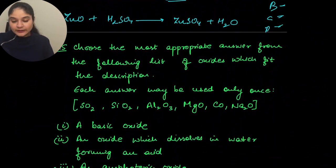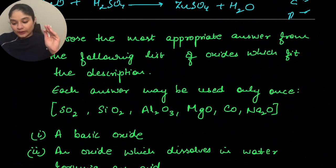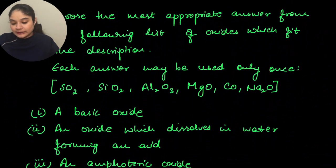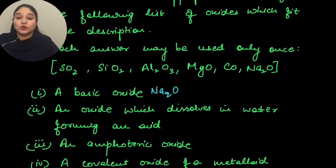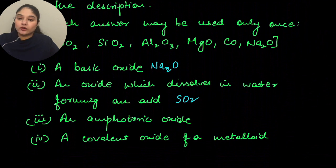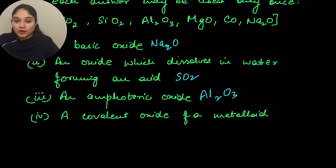Question 15: from the list of oxides, identify which fits each description. A basic oxide: Na₂O. An oxide which dissolves in water forming an acid: SO₂, because it gives sulfuric acid. An amphoteric oxide: Al₂O₃ — aluminum oxide. A covalent oxide of a metalloid: SiO₂.